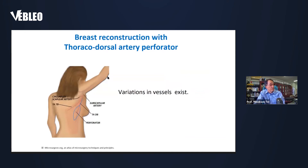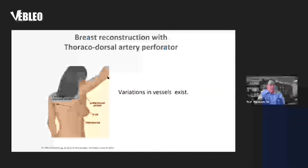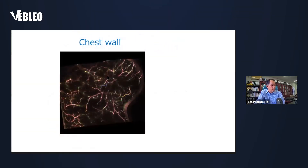Another application utility of PAI is for breast reconstruction plastic surgery, particularly looking at thoracodorsal artery perforators. We know that this vascular system is quite varied between each individual — many variations exist in this field. It is necessary to visualize these vessels for each individual when reconstruction surgery is performed. For this purpose, PAI is quite useful.